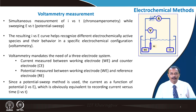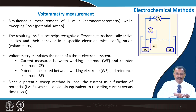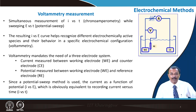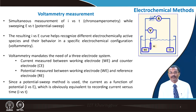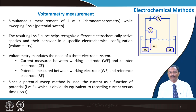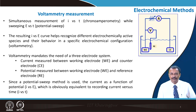Voltammetry mandates the need of three electrodes. Current is measured between the working electrode and the counter electrode, and potential is measured between the working electrode and the reference electrode. Since a potential sweep method is being used, I versus E is measured, which is equivalent to recording current versus time, because both are either measured or applied as a function of time.